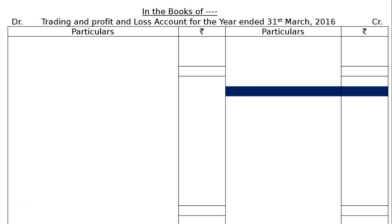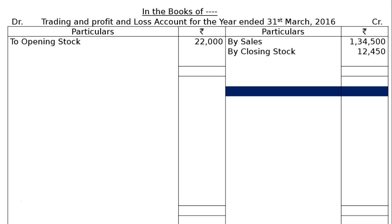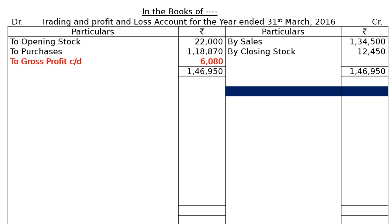On the credit side we have: By Sales rupees 1 lakh 34,500; By Closing Stock rupees 12,450. On the debit side: To Opening Stock rupees 22,000; To Purchases rupees 1 lakh 18,870. We total the credit side and find the Gross Profit carried down — the difference is rupees 6,080.